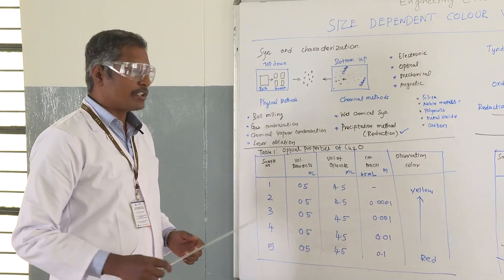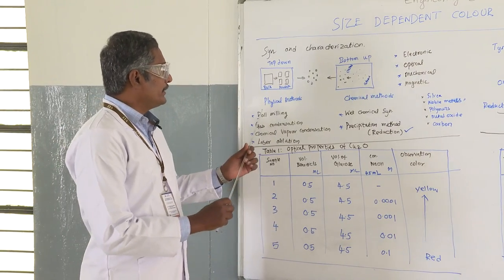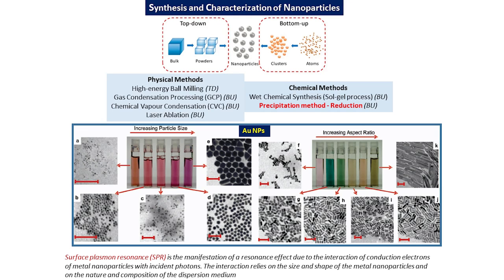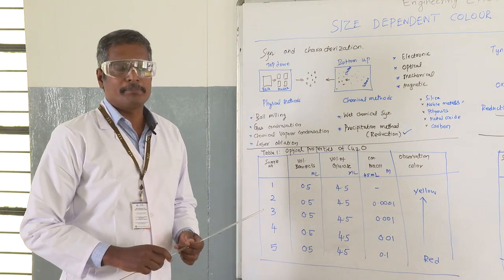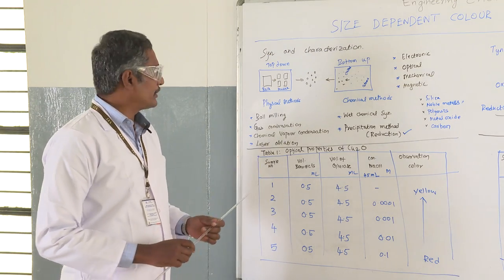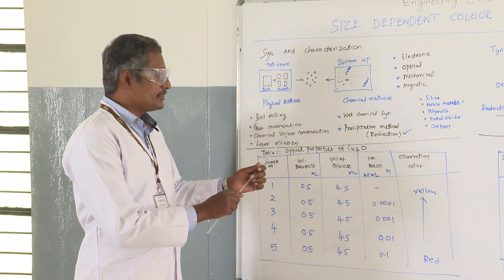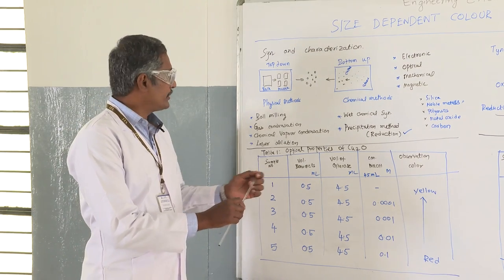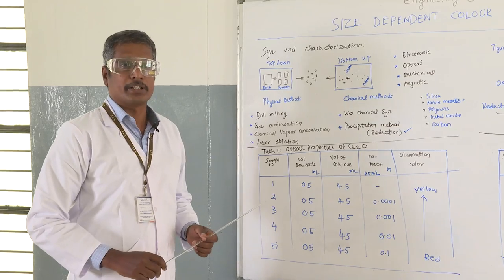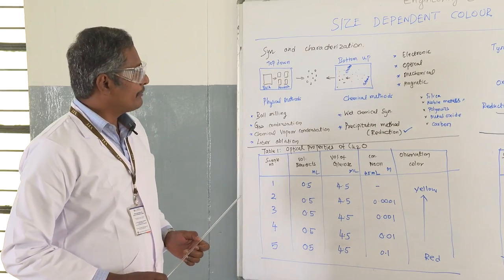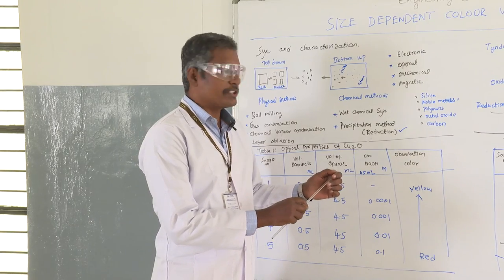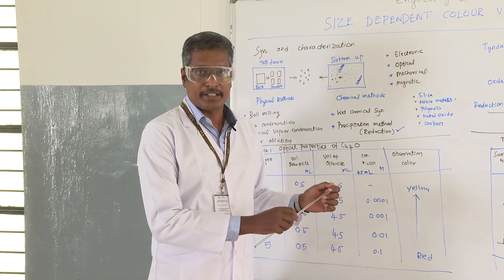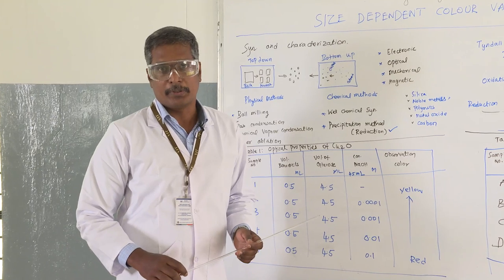To get more information, nanoparticles can be synthesized by physical or chemical methods. Under the physical method, we can do ball milling — crushing bulk materials to nanoparticles — or gas condensation, chemical vapor condensation, or laser ablation. For the chemical method, wet chemical synthesis such as the sol-gel method or precipitation method, which is a reduction process, can be used to achieve nanoparticles.